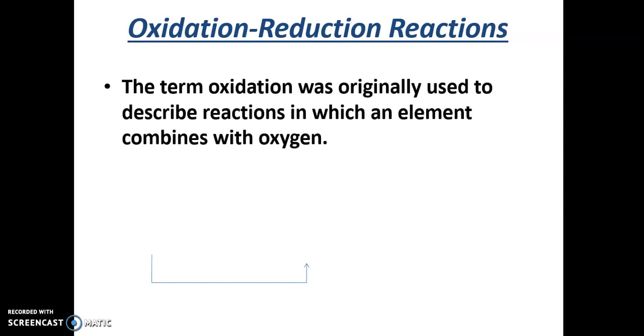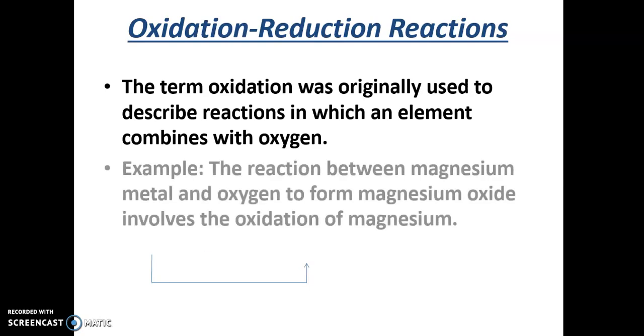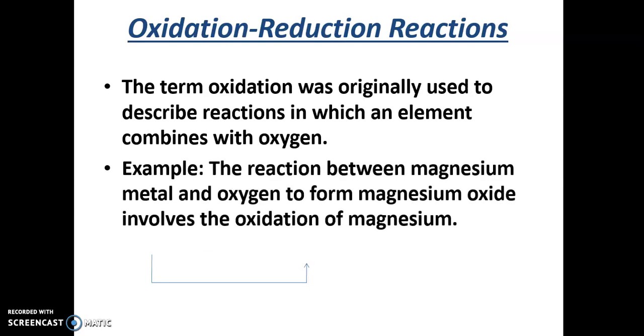The term oxidation was originally used to describe reactions in which an element combines with oxygen. For example, the reaction between magnesium metal and oxygen to form magnesium oxide involves the oxidation of magnesium. Here is the chemical equation: 2 Mg(s) + O₂(g) → 2 MgO(s).